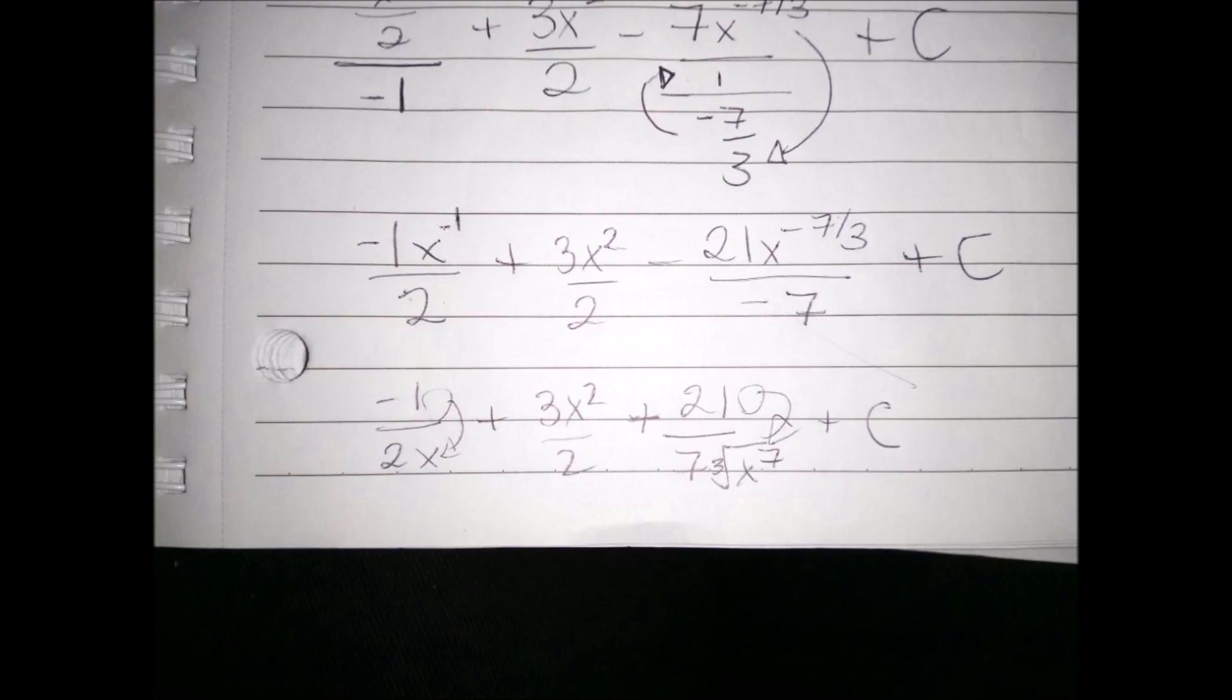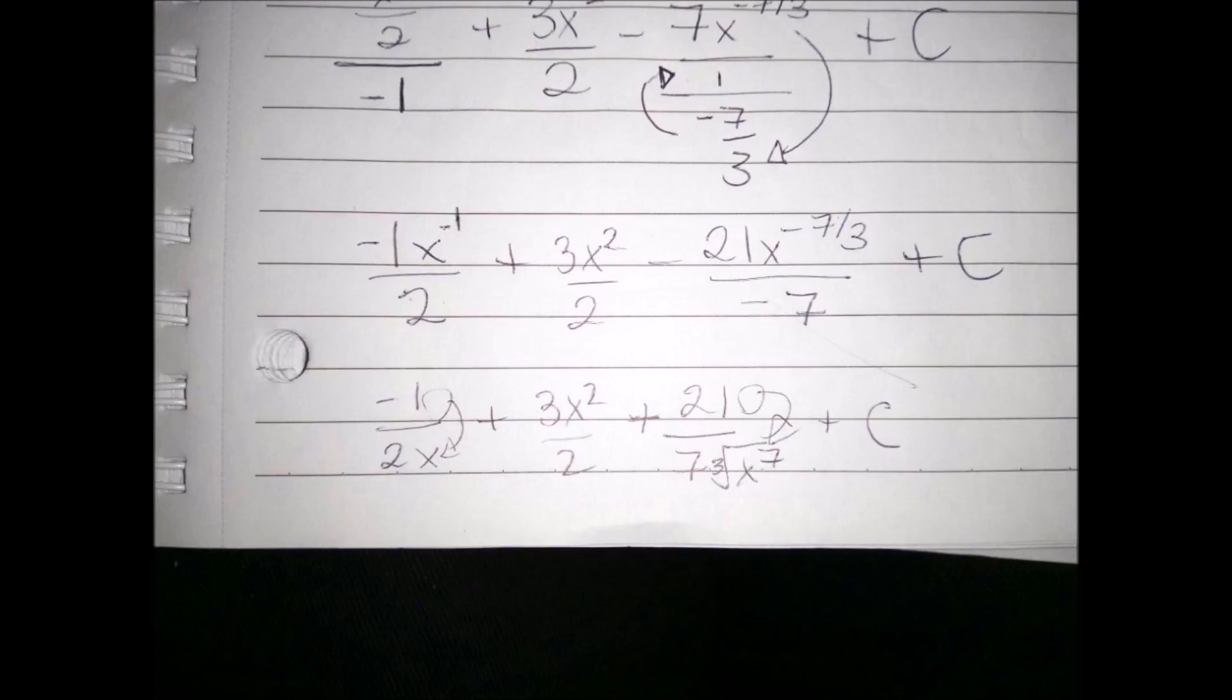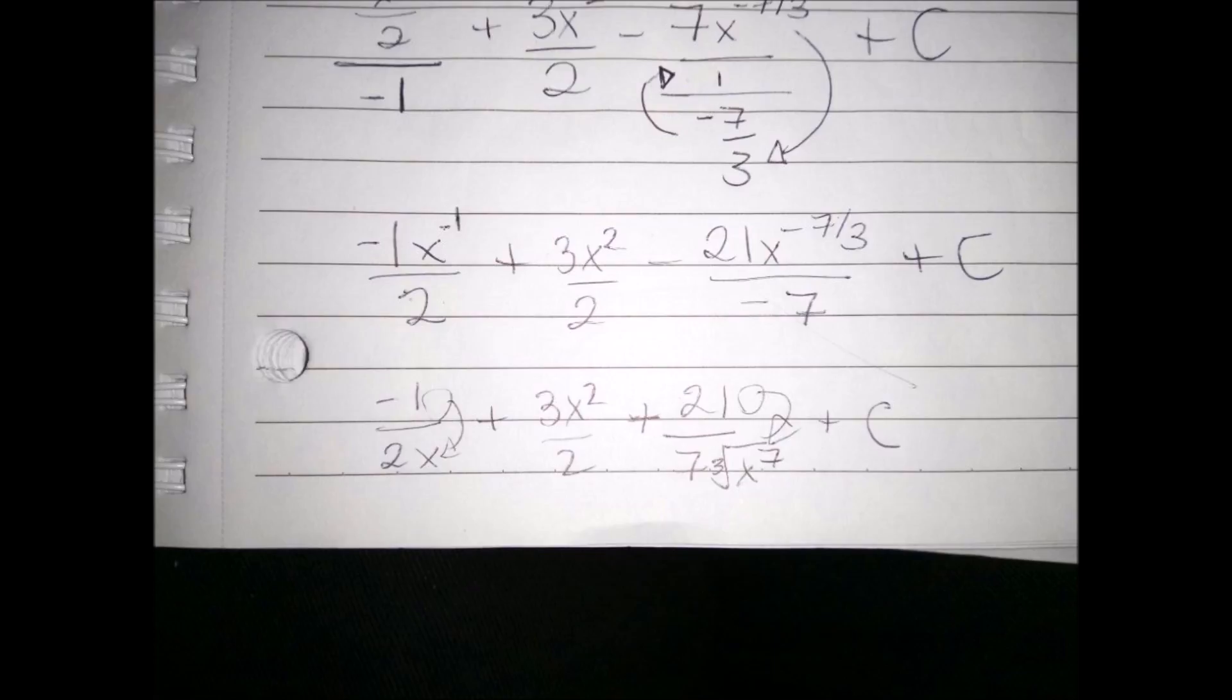Using the rule of fraction exponents, we convert the 7 thirds into square roots. We simplify the remaining fraction and we have our answer.